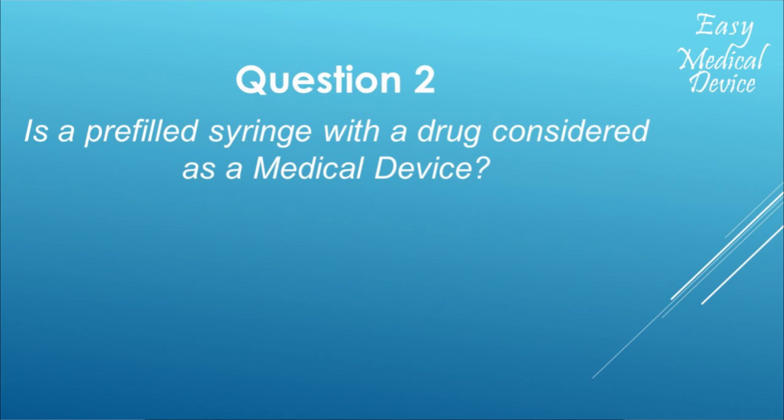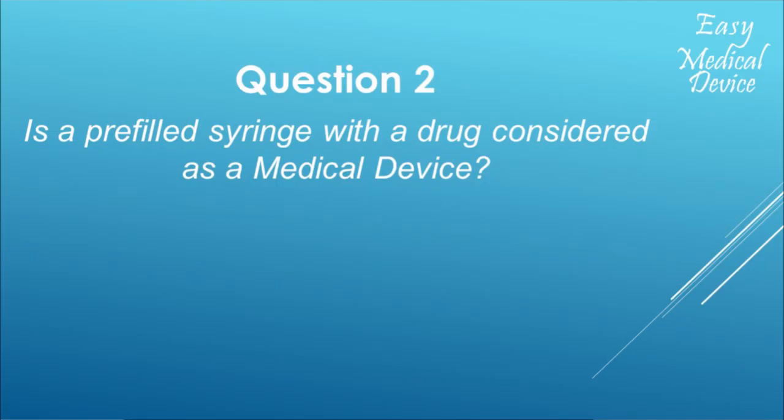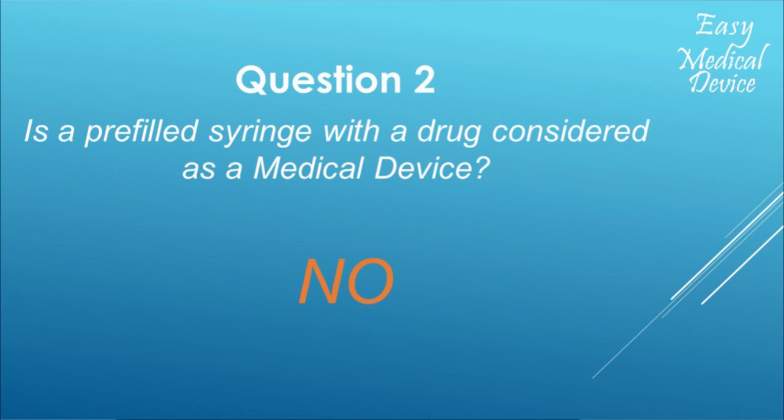My second example: let's take a syringe — easy. But let's make it more complicated: a syringe filled with a drug, say an antibiotic. Is it a medical device or a drug? Pause the video. The answer: this syringe filled with a drug is a drug. Why? Because what we look at is the principal intended use. The intended action we want is not the action of the syringe — the syringe is the vehicle to transport the drug. The action we want is the drug healing the patient. So the principal intended use is not the syringe.